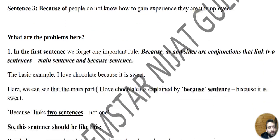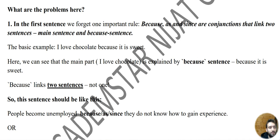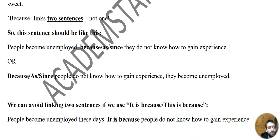So I've explained the reasons and mistakes. How to write the first sentence correctly: 'People become unemployed because / as / since they don't know how to gain experience.' By the way, if we use SINCE, we should put a comma before it. We shouldn't separate the main clause and the subordinate clause. Or alternatively: 'Because / As / Since people don't know how to gain experience, they become unemployed.'